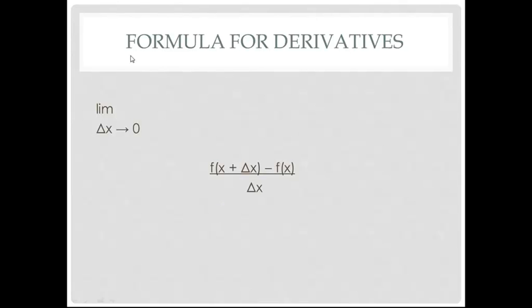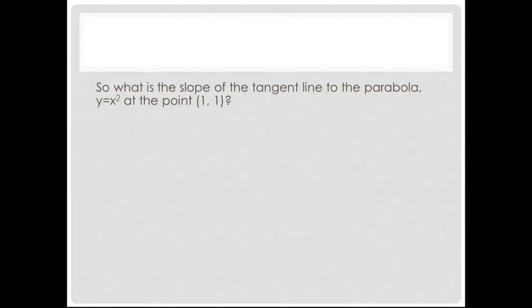If you plug any equation into this formula, you're going to come out with the equation for the slope at every particular point. Let me give you an example of what that looks like. Let's say we wanted to know the slope of the tangent line to the parabola y equals x squared — specifically, what is that slope at the point (1, 1)? First, let's find the equation for the slope at any point — the derivative equation.